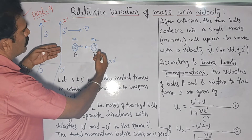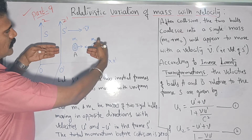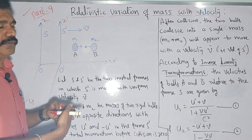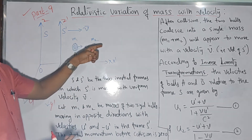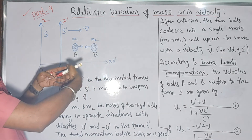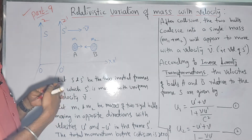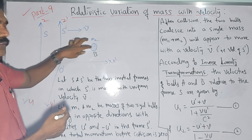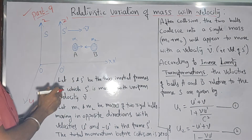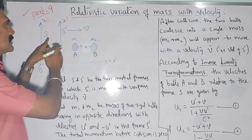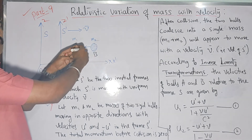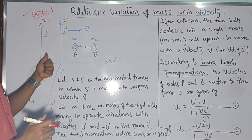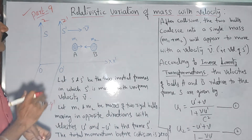Once the two bodies move in opposite directions, after a certain time they will collide. The collision takes place and the two bodies coalesce into each other, so that the total mass becomes M1 plus M2. Before collision they are separate masses M1 and M2; once they collide, the two bodies coalesce and the total mass becomes M1 plus M2. That total mass, with respect to the moving frame S', is constant, since it belongs to frame S'.